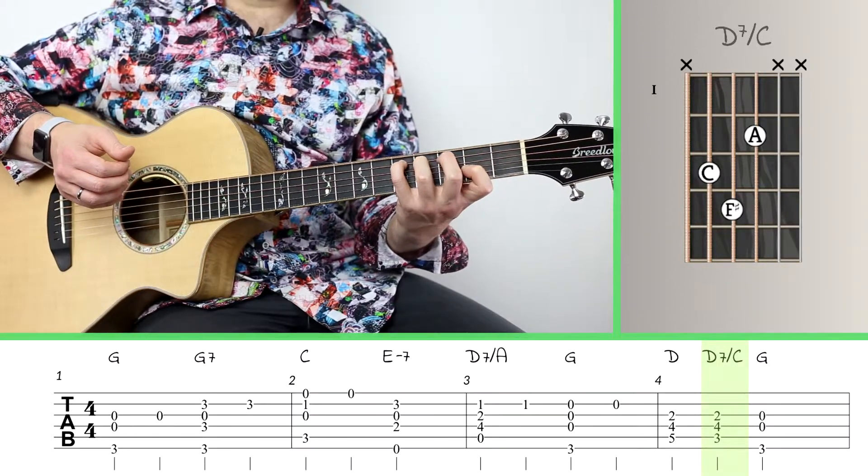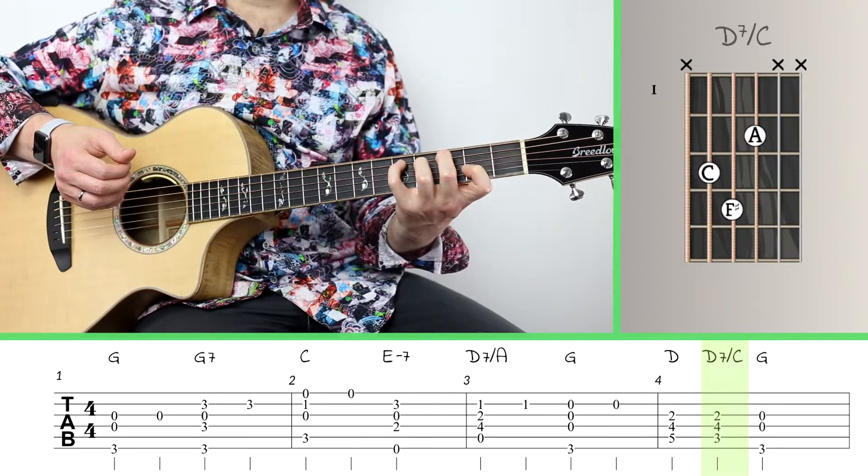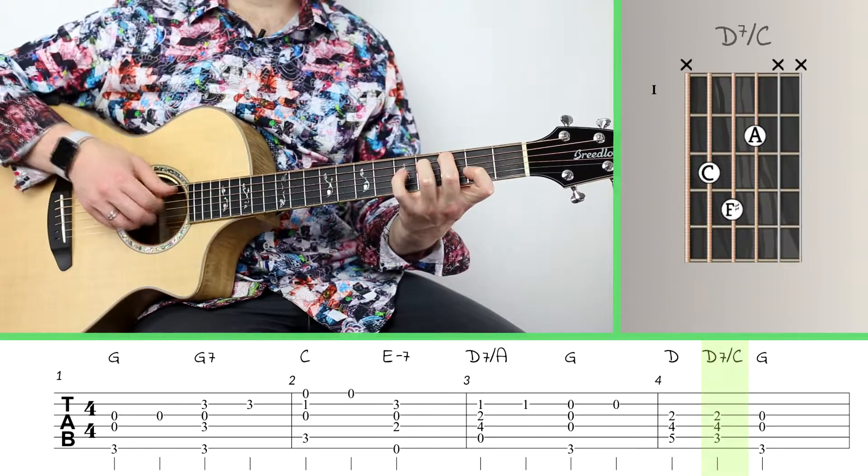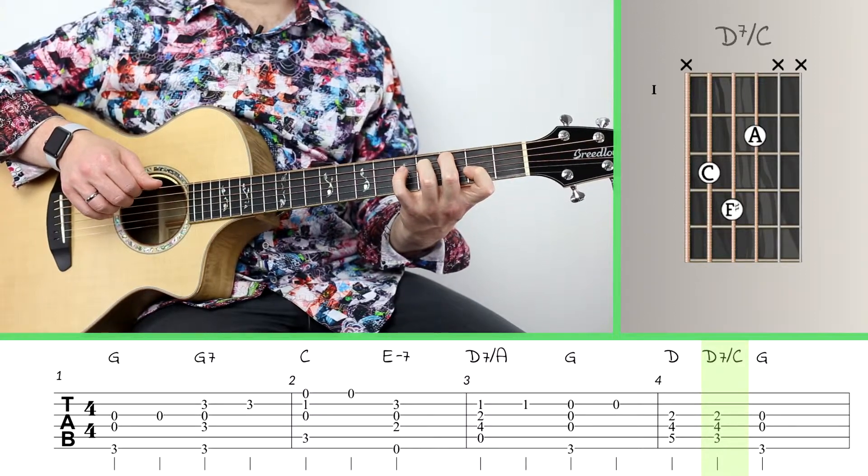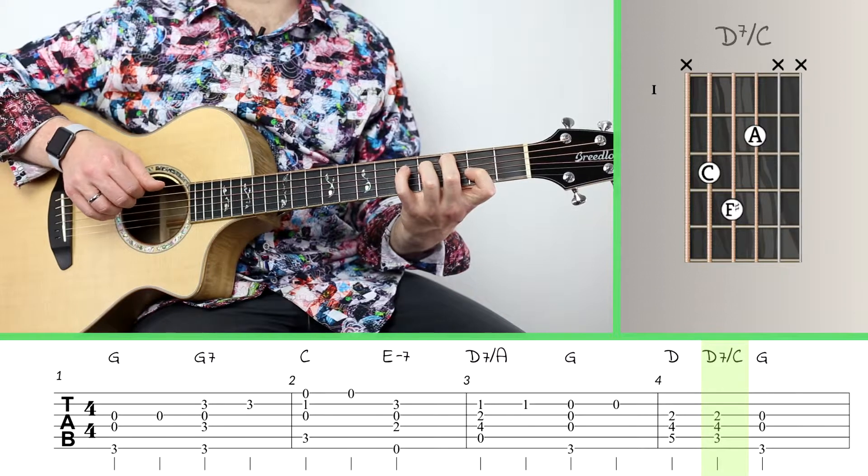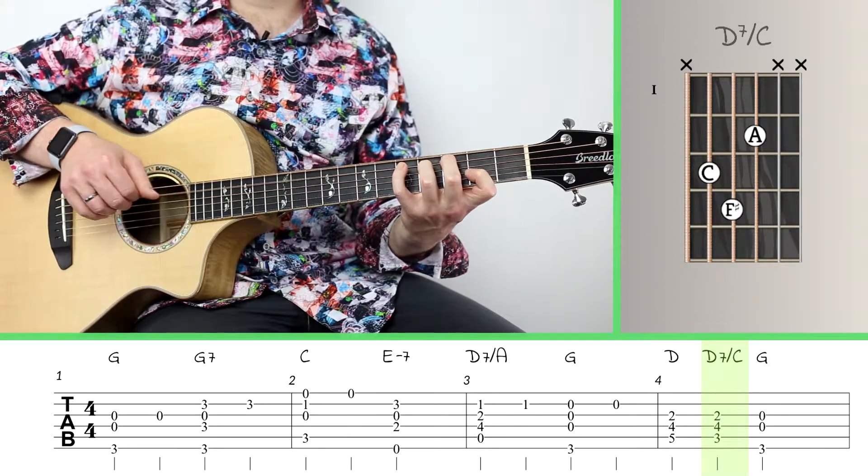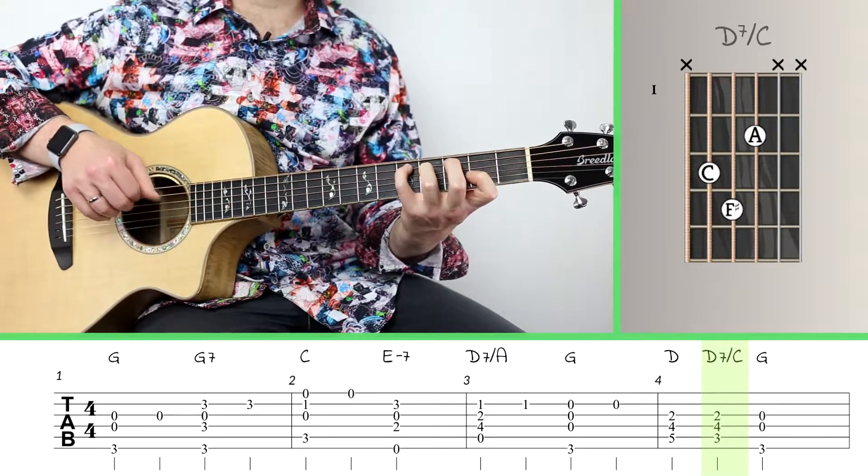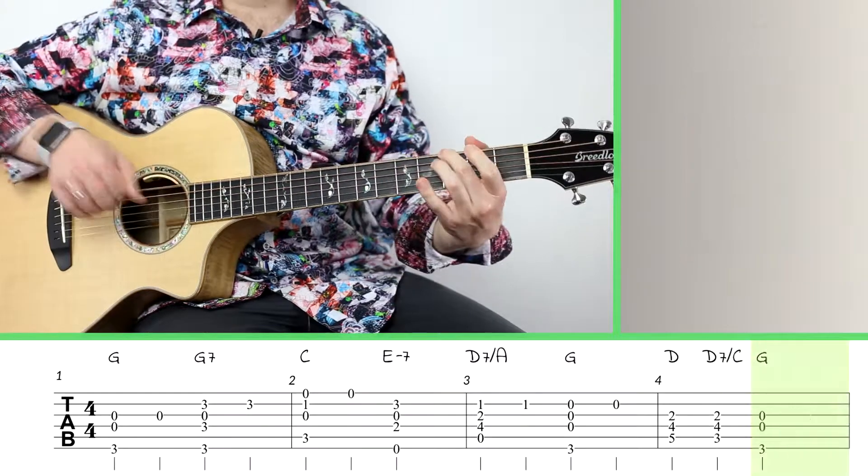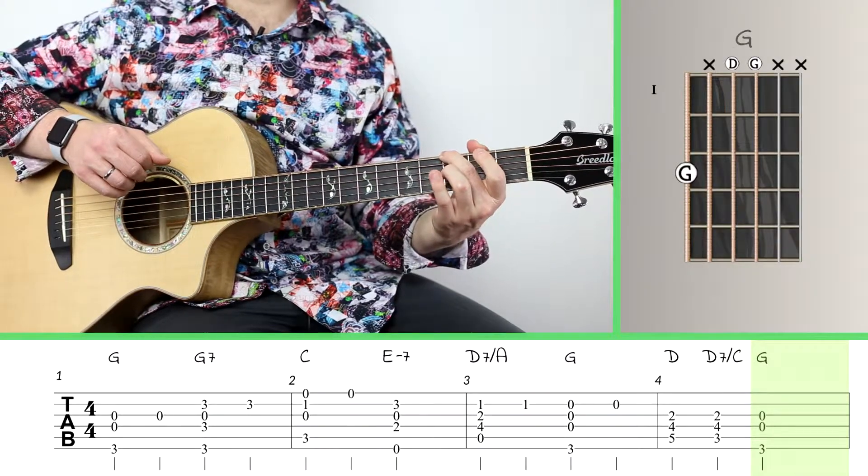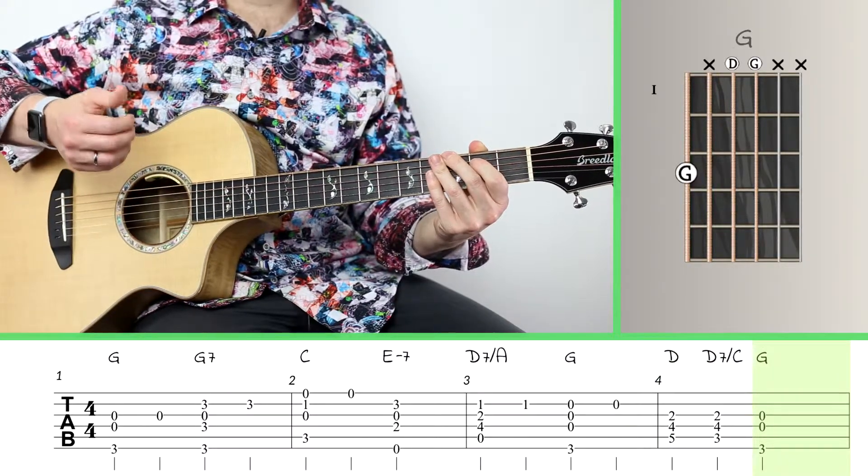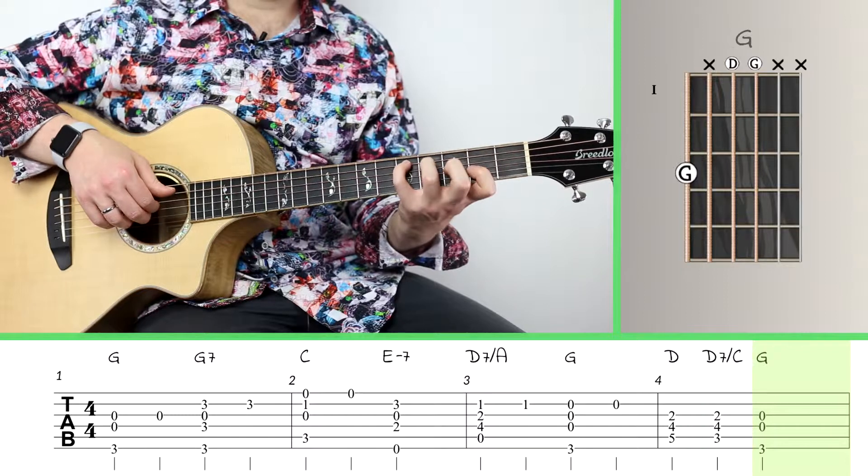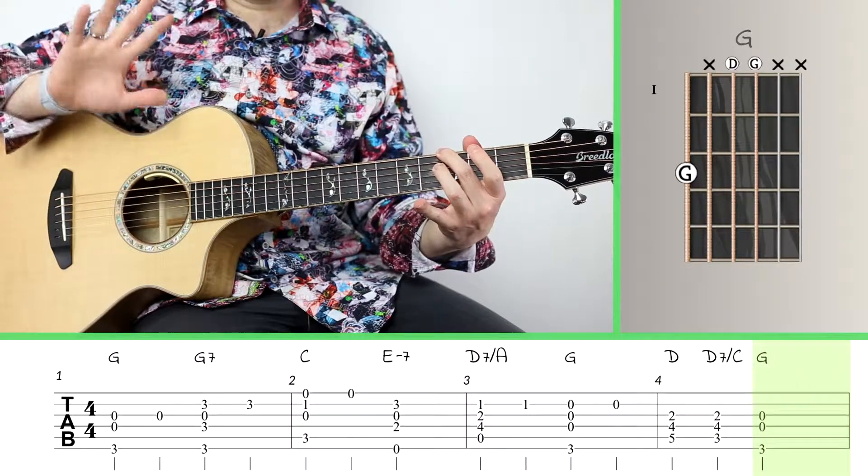And then what I do is I shift down so that the fifth string, instead of being D, turns into C, which is actually the flat seventh of the chord, thus turning it into a dominant seventh chord. And that's a really nice transition back to the open G. And I've only got three notes per chord, so I just use thumb index and middle for those on the right hand.